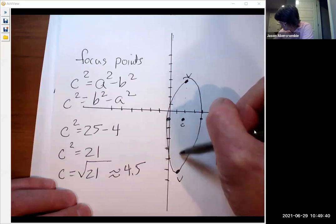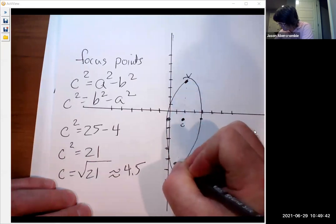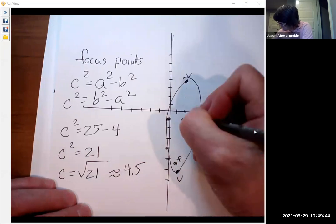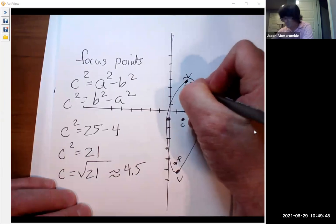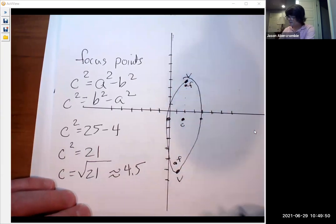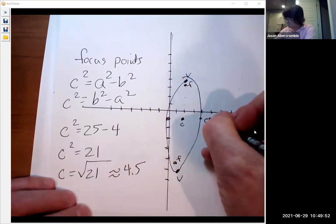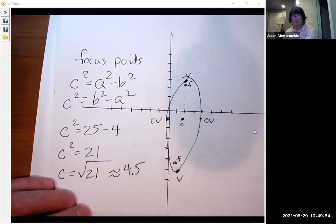One, two, three, four. So the focus point is going to be way down here. Focus point one, two, three, four and a half. Not a very good picture, but it works. And these are the co-vertices right here. So those are all the parts of the ellipse.